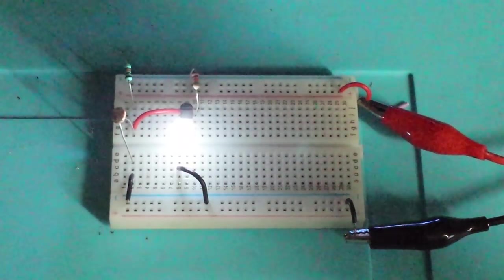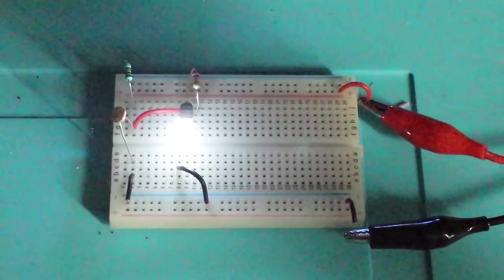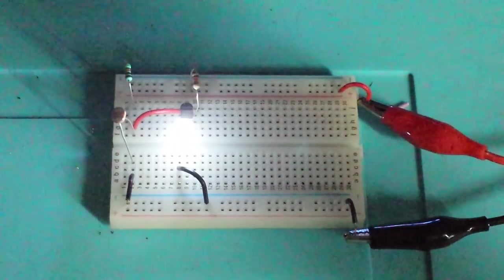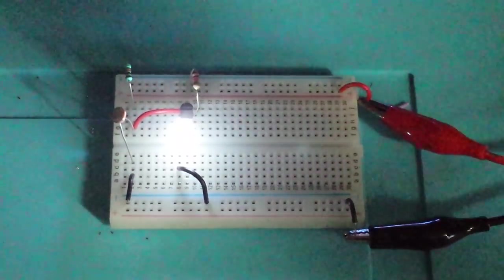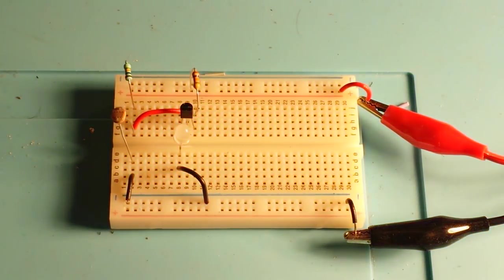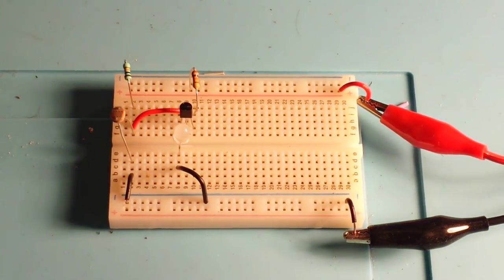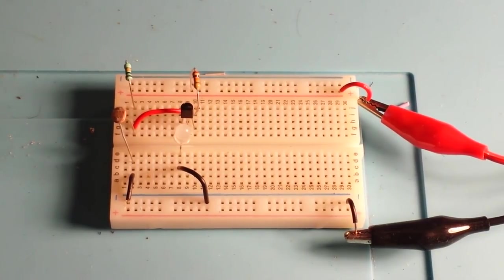As you can see here, we have a bright light, it's a bright LED, and it's dark. But what happens if I turn on the light? The LED goes out.